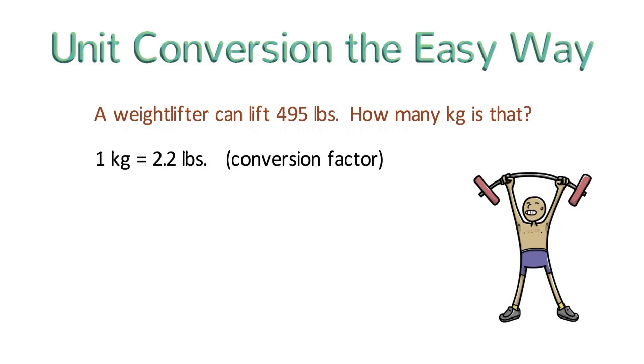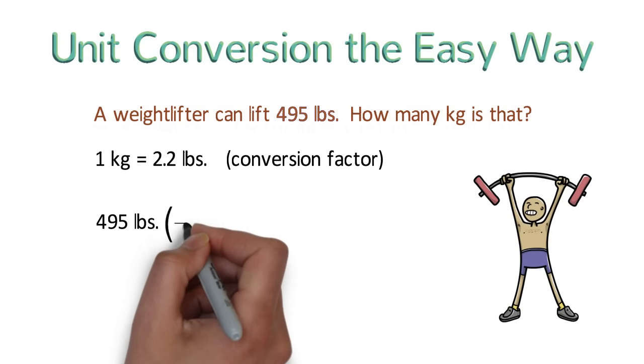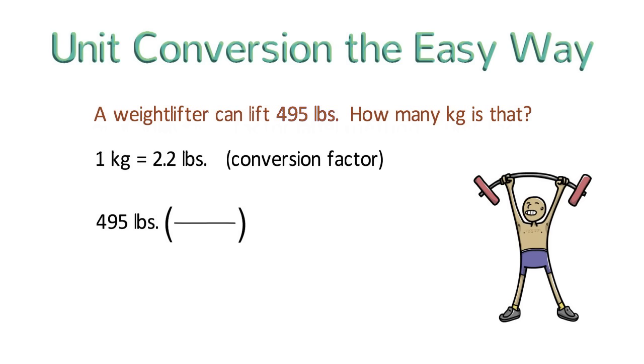The first thing you should always do is write down the quantity that you want to convert. This is the number from the question, not the conversion factor. Please also include the units. Next, we're going to multiply this number by a fraction. Inside the fraction, we're going to write the two numbers from the conversion factor. But how do we know which one goes on top and which one goes on the bottom? To answer that question, all we need to do is look at the units, which is why we always include the units in the calculation itself.